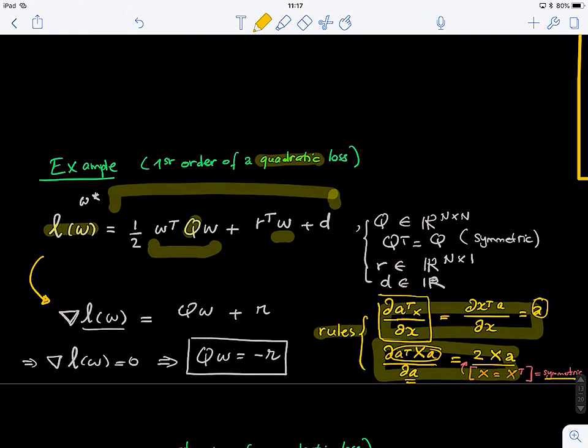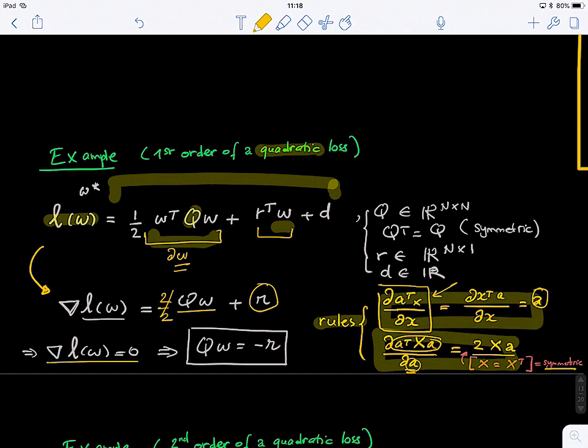If we apply those rules here, we compute the derivative of this first form with respect to w. We will find it's 2 times qw, and this cancels out. For the second term, we apply this rule and get just r. Now, what we're looking for is when the gradient equals 0 along all dimensions. Our qw should equal minus r. This is the first optimality condition for our quadratic loss function for an arbitrary q.